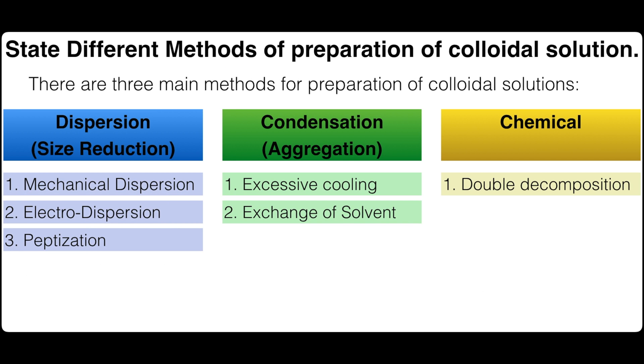Now let's talk about the chemical methods. There are four possibilities: one is double decomposition, hydrolysis, oxidation, and reduction.